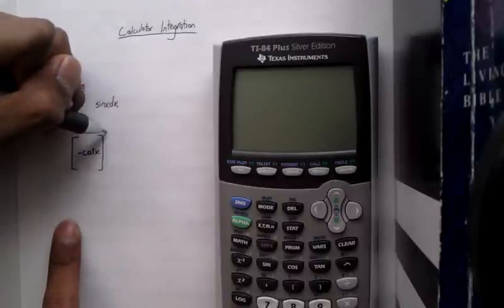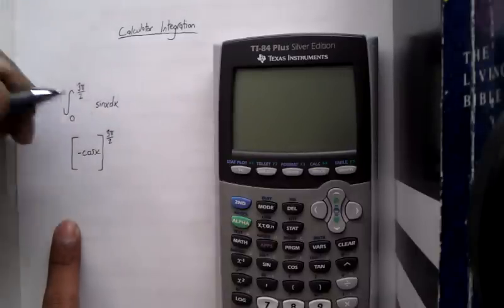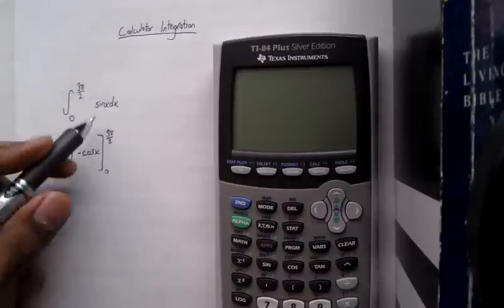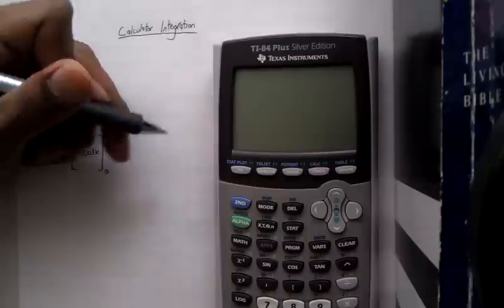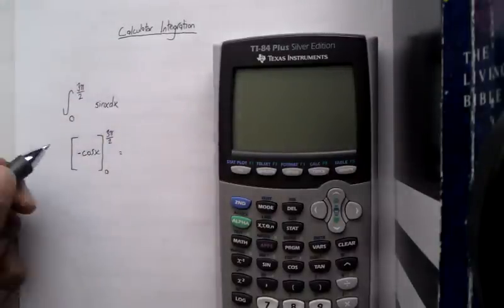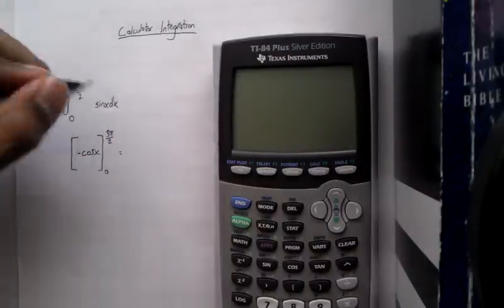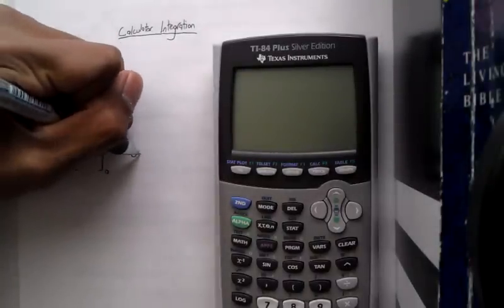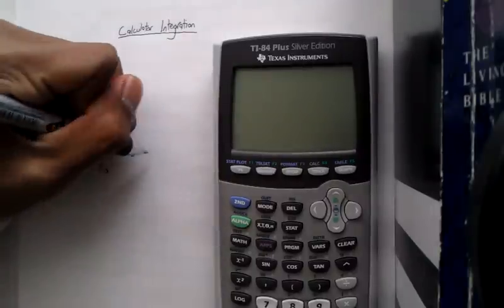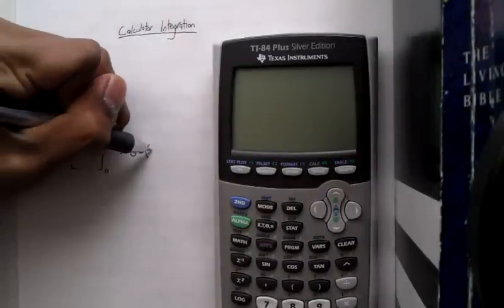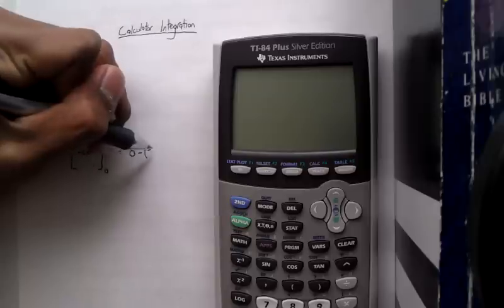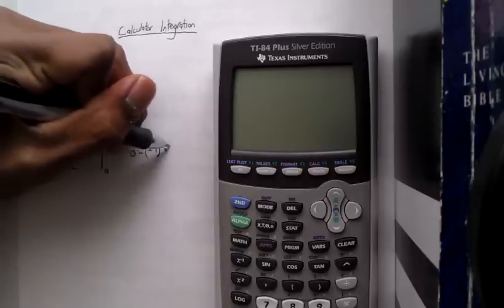You're going from 0 to 3 pi over 2. So that's going to equal negative cosine of 3 pi over 2, which is 0, minus negative cosine of 0, which is 1, so your answer is 1.